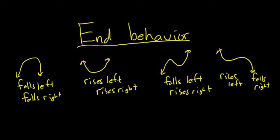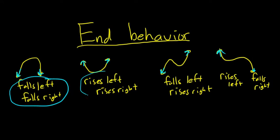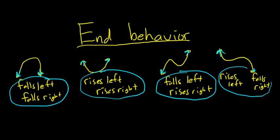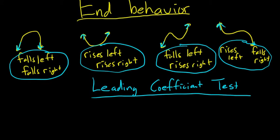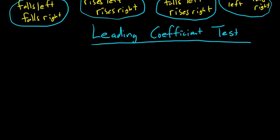So in the first case the function falls left and falls right. In the second case it rises left and rises right. In the third case it falls left and rises right. In the last case it rises left and falls right. Given a polynomial, you'll have to figure out which of these behaviors it exhibits. To do that, there's something called the leading coefficient test.